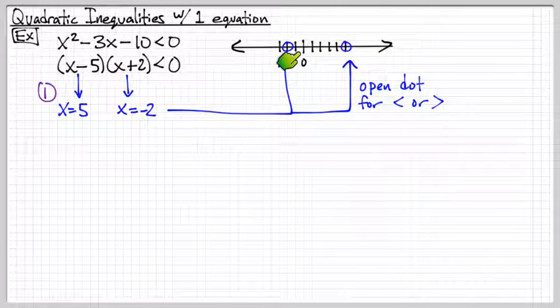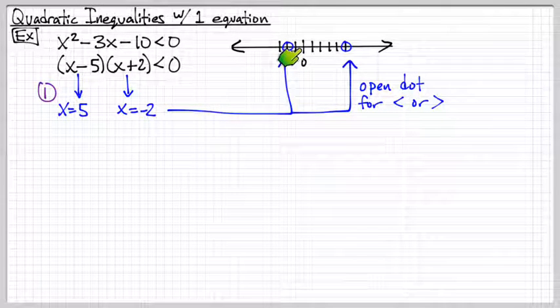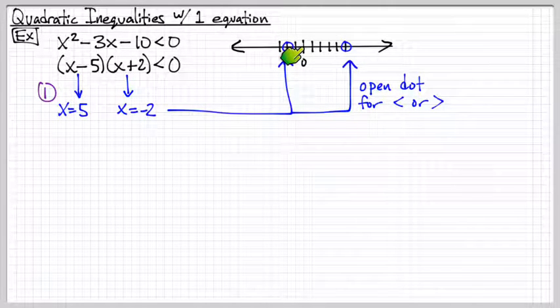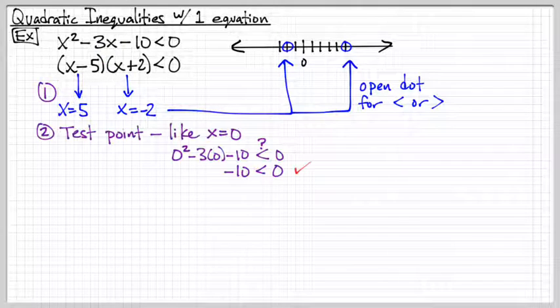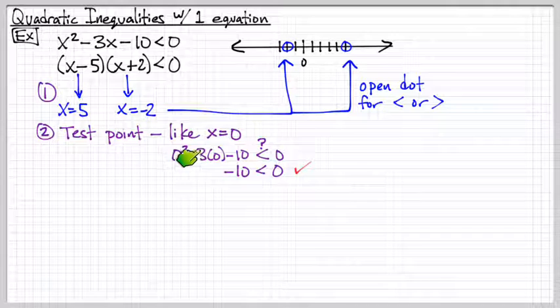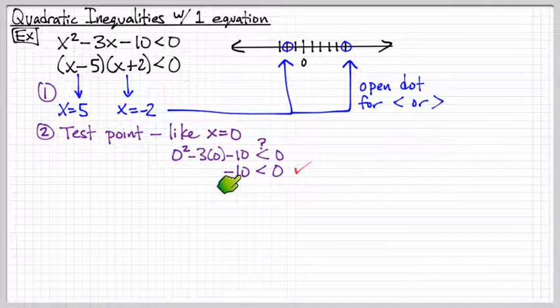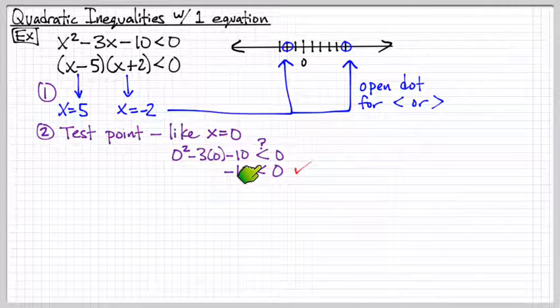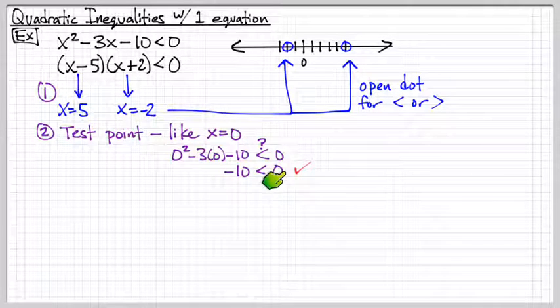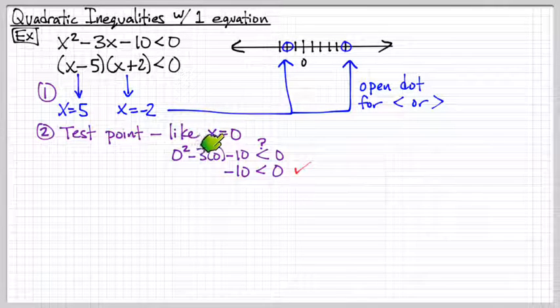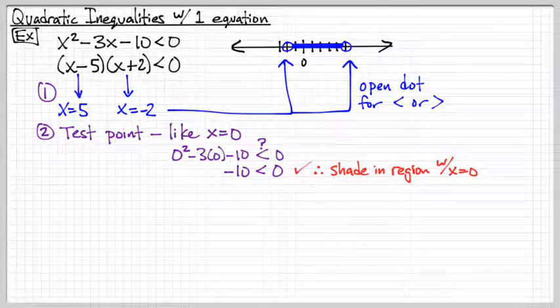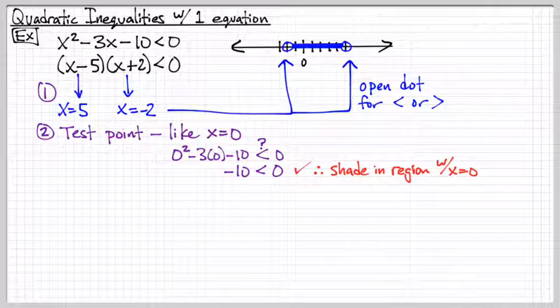Now we either need to shade the inside of this region or we want to shade both of the outer pieces. And again, the basic idea is choose a test point. Let's choose x is equal to zero because it's a very nice, easy point to use. And let's see what happens. So we plug in zero into this equation and we get zero minus zero minus 10, which is negative 10. Is that less than zero? So this is true. Negative 10 is less than zero. So zero, x is equal to zero is a solution. So everything on the inside here between those two open dots are a solution as well.